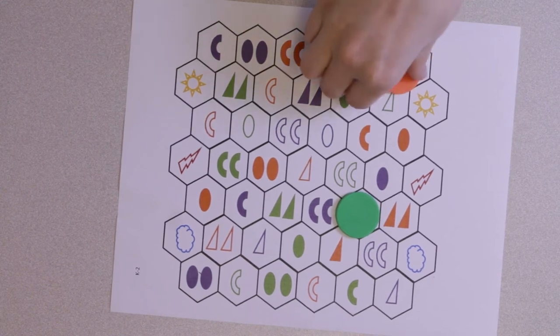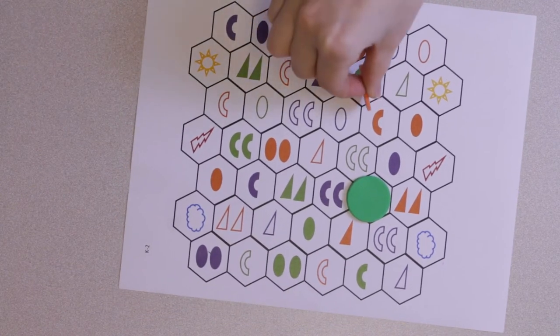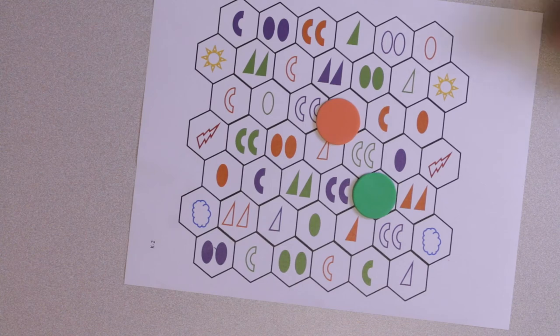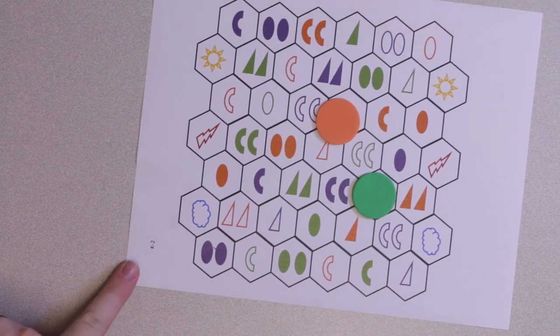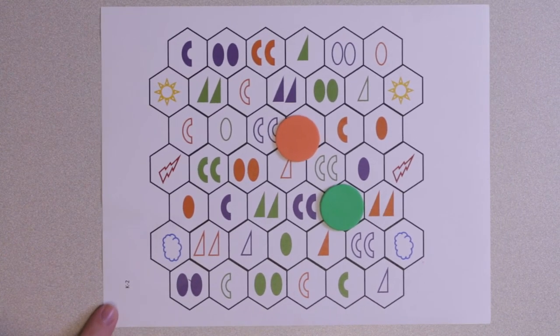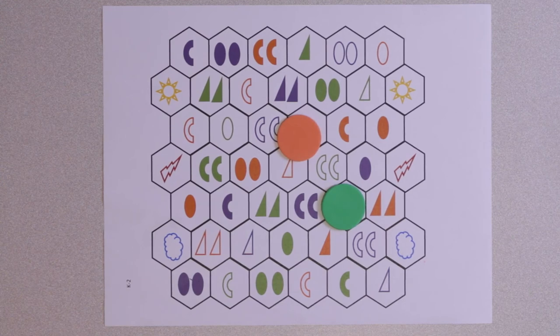Now it's orange's turn again. Orange rolls a 3. They move from the orange oval to the blue ovals because they are the same shape. They move from the blue ovals to the green ovals because they have the same shape and the same number of shapes. They move from the green ovals to the blue oval because they are the same shape.